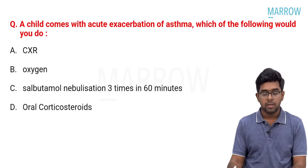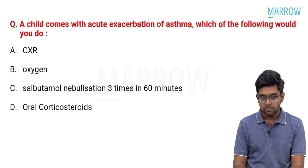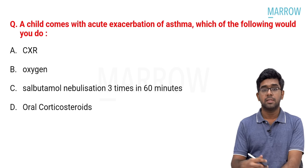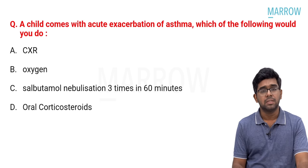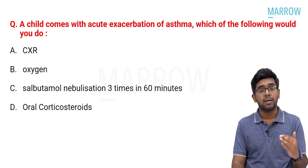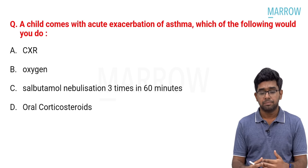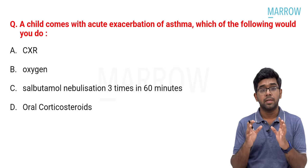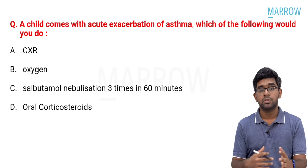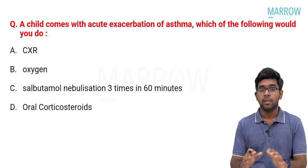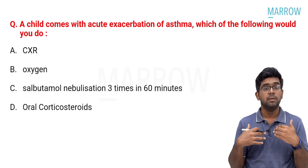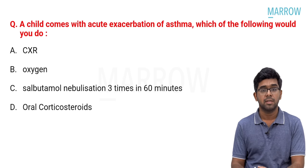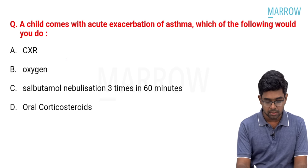Next: a child comes with acute exacerbation of asthma — which of the following would you do? This is a multiple option question. Chest X-ray is usually not done at the time of acute exacerbation of asthma — our primary goal is to maintain proper oxygen status and quickly reverse bronchoconstriction. We don't waste time taking an X-ray. Maybe in refractory cases as a last step, but not usually. So chest X-ray is wrong here.